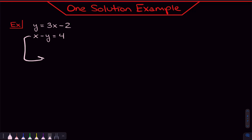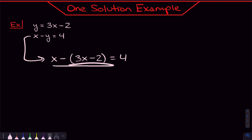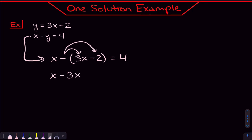In the bottom equation, I can rewrite it as X minus Y, and we know Y is the same thing as 3X minus 2, so I can plug that in. That equals 4. That's me rewriting the bottom equation. Now all we have left is X's. I'll start by distributing through the negative, getting negative 3X, and distributing that negative to negative 2 gives a positive 2, equal to 4.